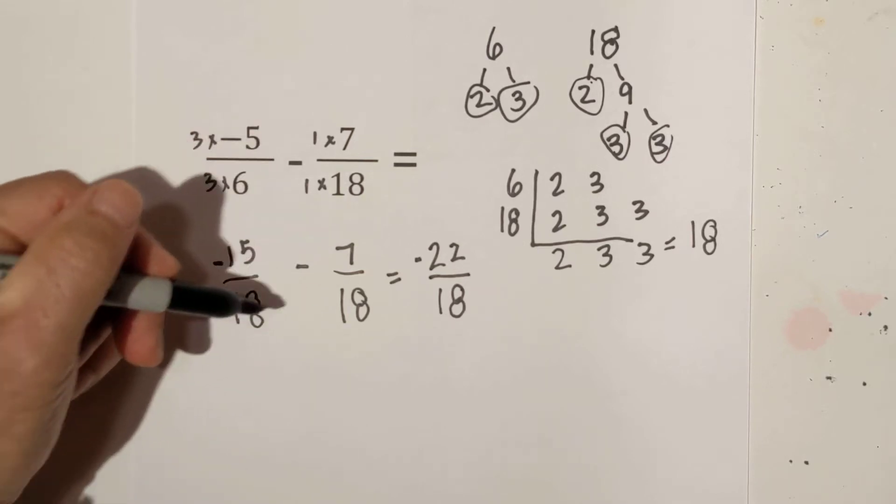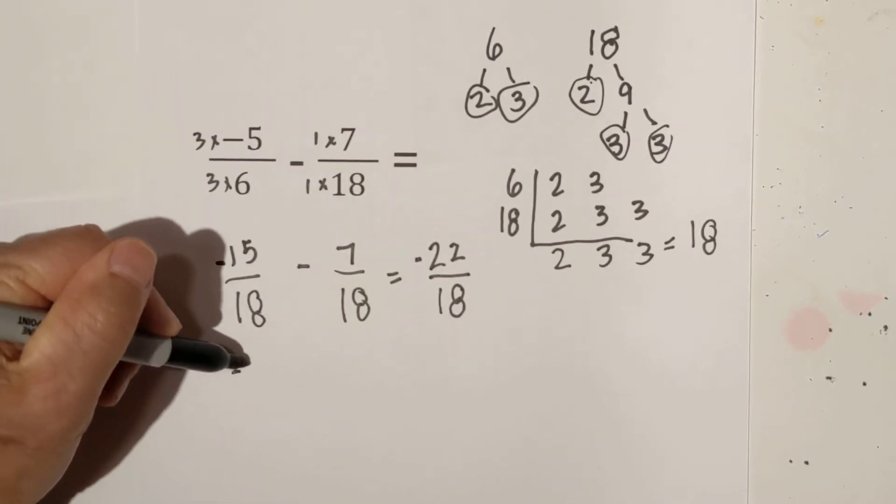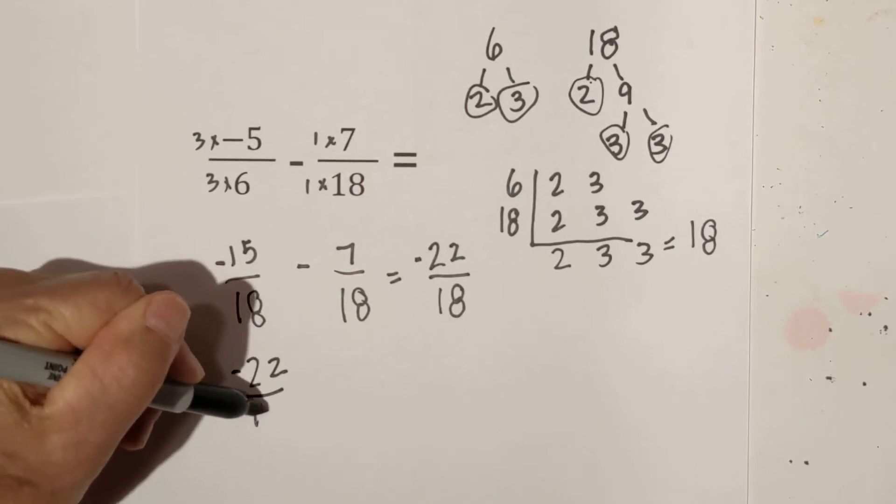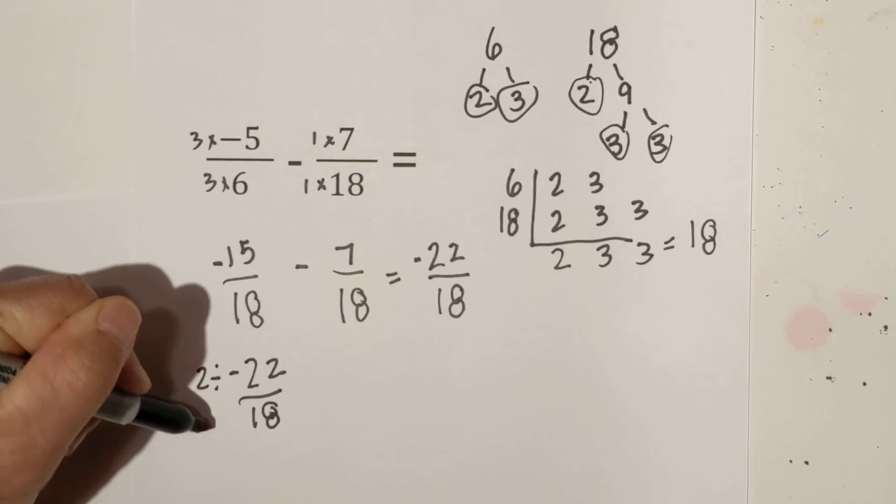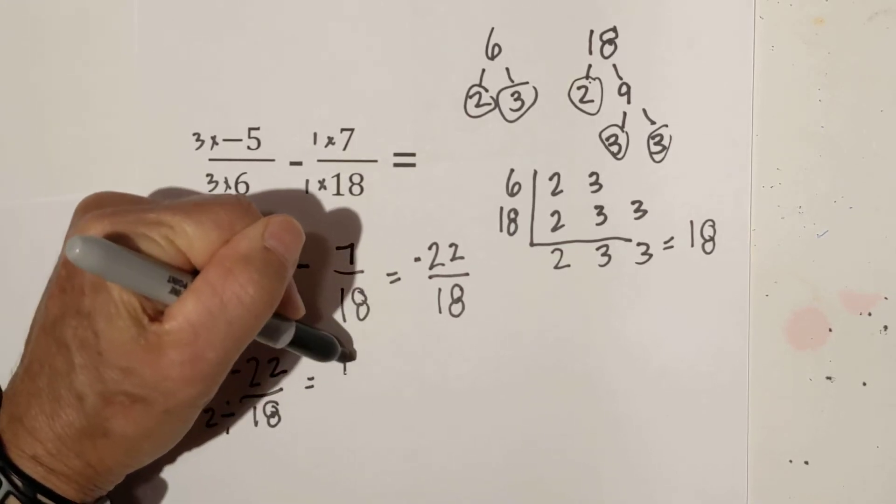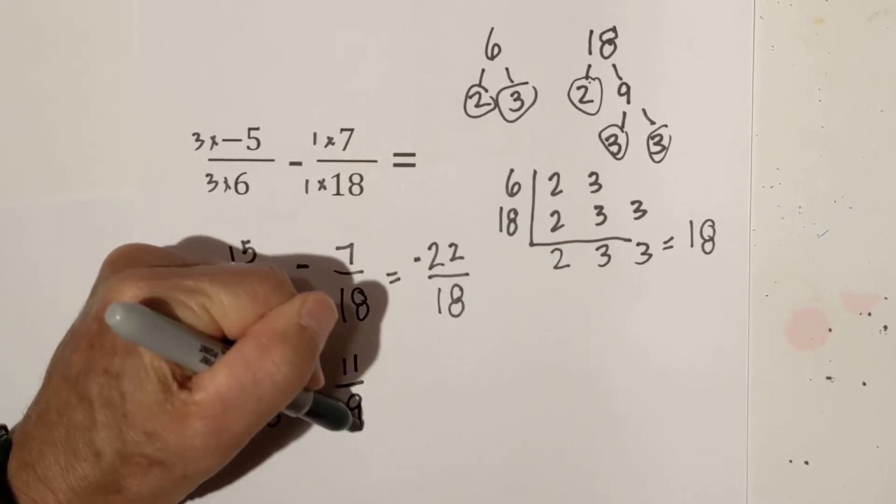Now what we can do is we can simplify this by dividing it by 2. So I am going to rewrite it. I am going to divide it by 2. And that equals 11 over 9.